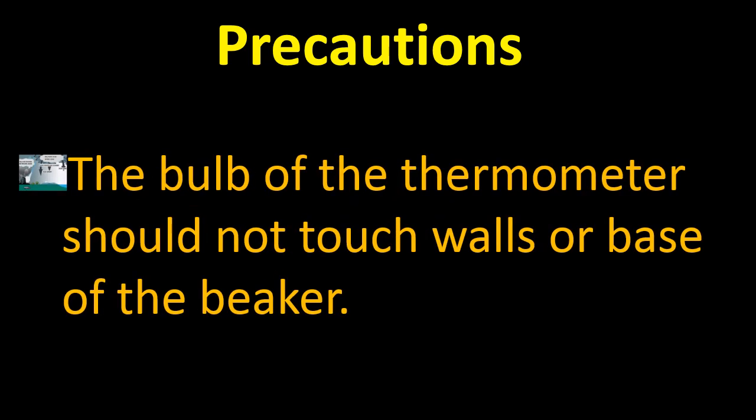Now, what are the precautionary measures for this experiment? Number one: The bulb of the thermometer should not touch the walls or base of the beaker. You have to hang the thermometer and capillary tube properly so that the bulb should not touch the base and should not be close to the walls of the beaker. This precaution is very important for performing this practical.